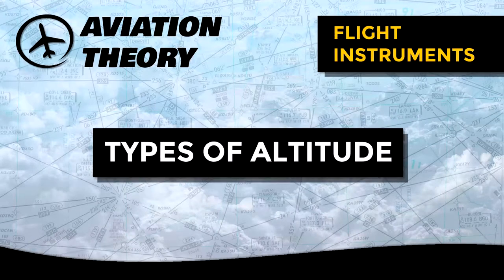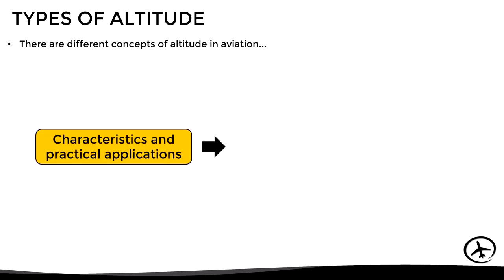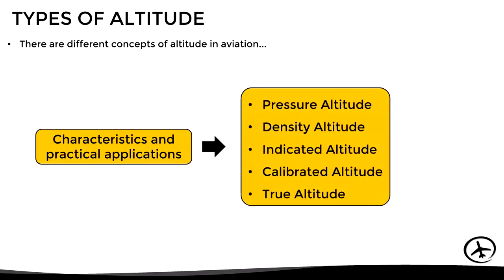Today we will talk about the types of altitude in aviation. There are different concepts of altitude depending on their characteristics and practical applications. Here we can mention the pressure and density altitude, which we discussed in a previous video, but we also have the indicated, calibrated, and true altitude, which we will see in detail in this video.